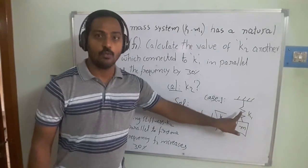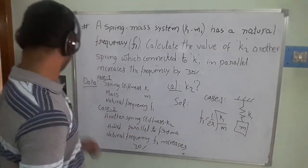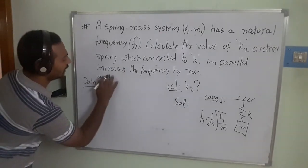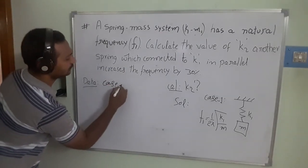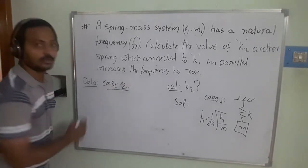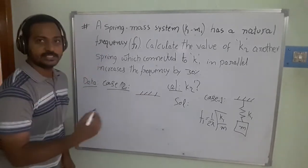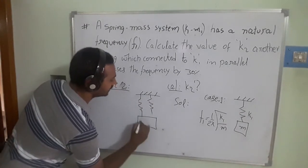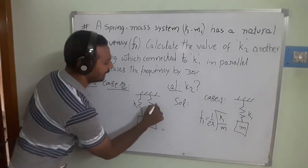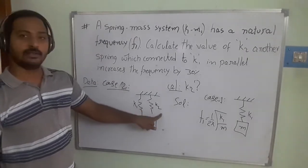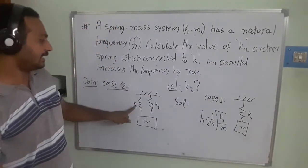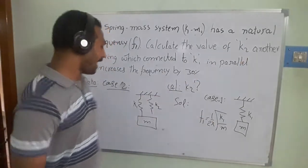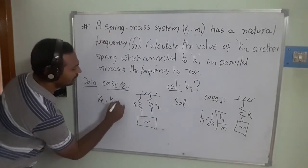For Case 2, I am adding one more spring in parallel to the first spring. This is the fixed end; here is the first spring k1 and the second spring k2, with the mass attached at one end. When two springs are in parallel, the equivalent spring constant is k_eq = k1 + k2.